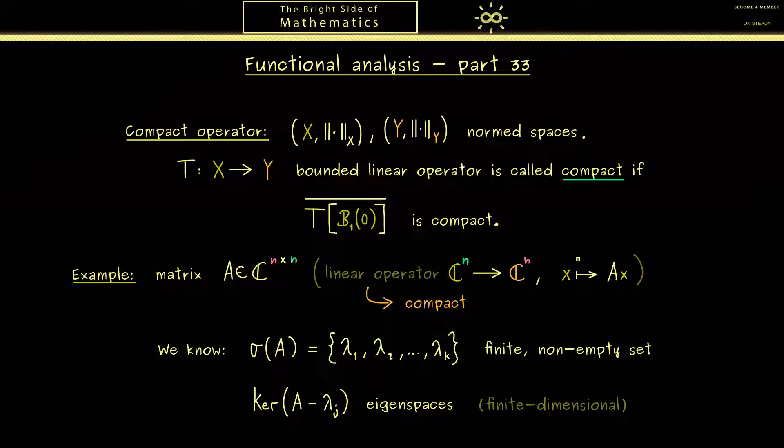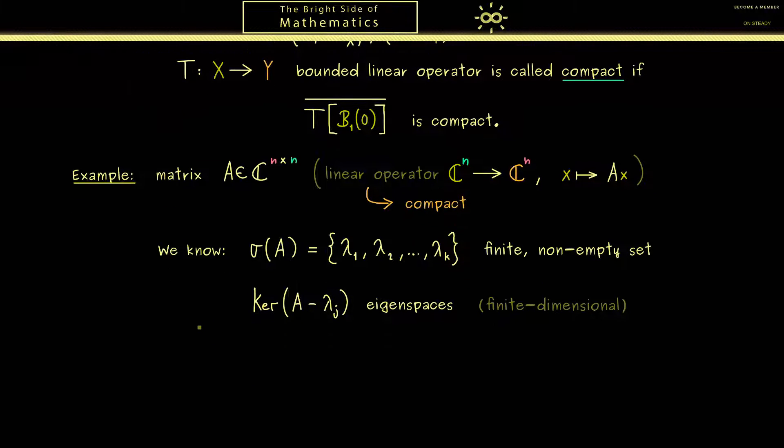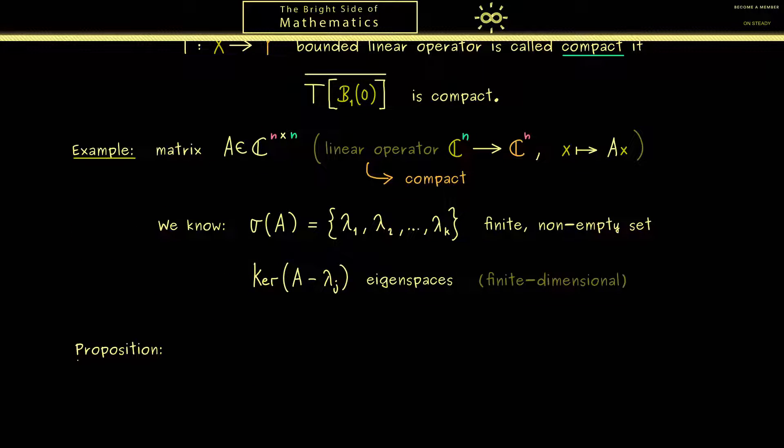Indeed, we will see that soon and maybe let's summarize all the facts in a proposition. So in general, what is the spectrum of a compact operator? Hence what we need now is one complete norm space, a Banach space X. And then we take an operator T from X to X and this one should be a compact one.